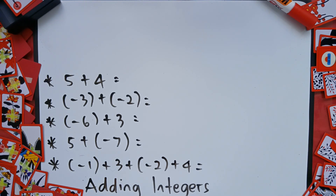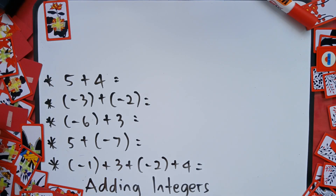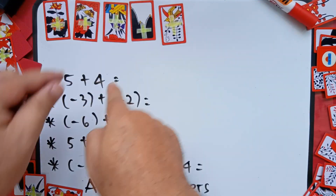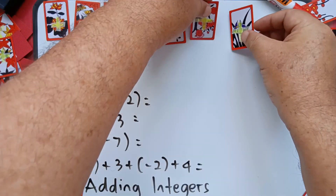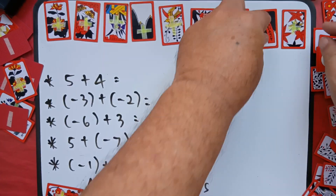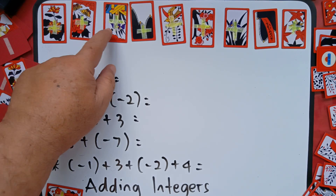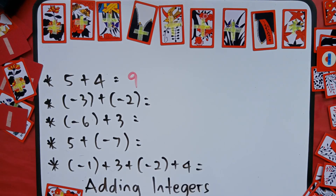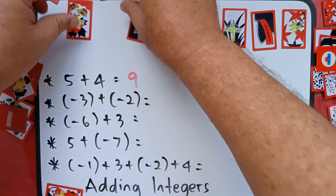Let's take number one: five plus four. Five is positive, four is positive. So what you'll do is take five positive cards, then add another four positive cards. Now what is the total? One, two, three, four, five, six, seven, eight, nine — we have nine positive tiles.